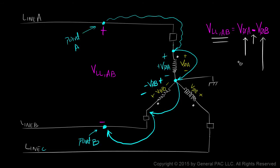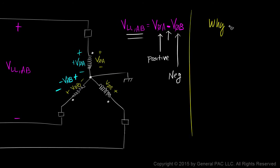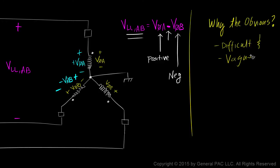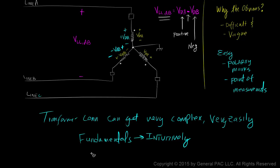Phase A voltage is considered a positive value whereas phase B voltage is considered a negative value. This concept was difficult and vague when I was learning it. It was easier to attribute phase A voltage as positive and phase B voltage as negative when thinking about polarity marks and the points of measurement. Also, transformer connections can get very complex very easily. It's incredibly important to understand the fundamentals intuitively so we can navigate through complex connections with some level of confidence.